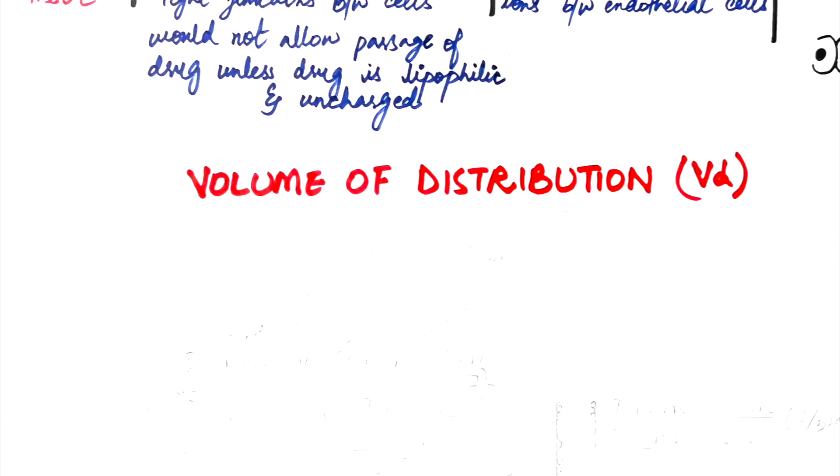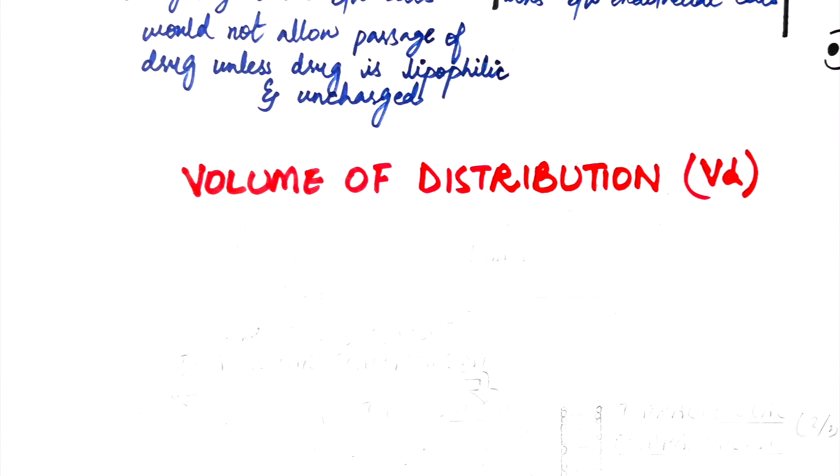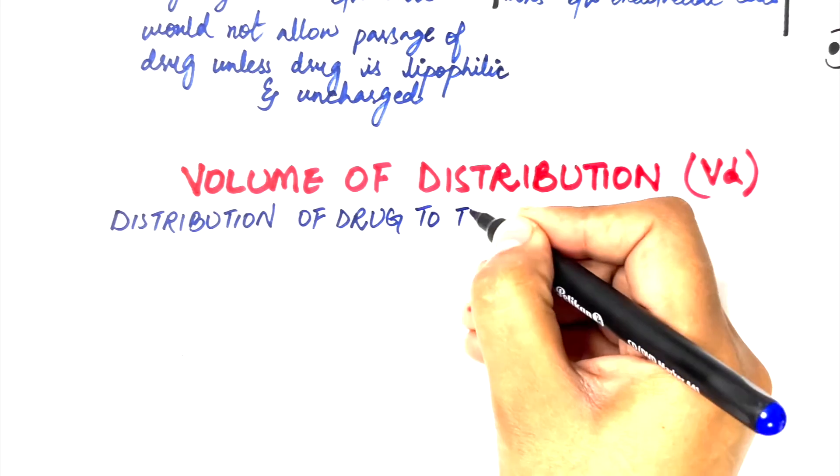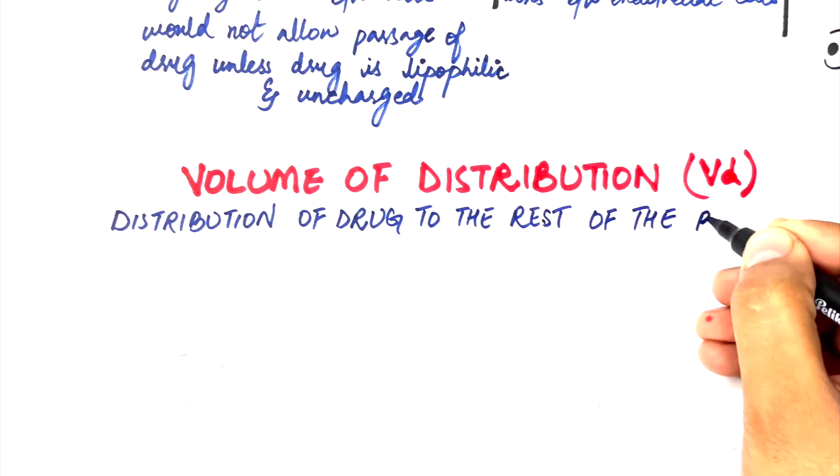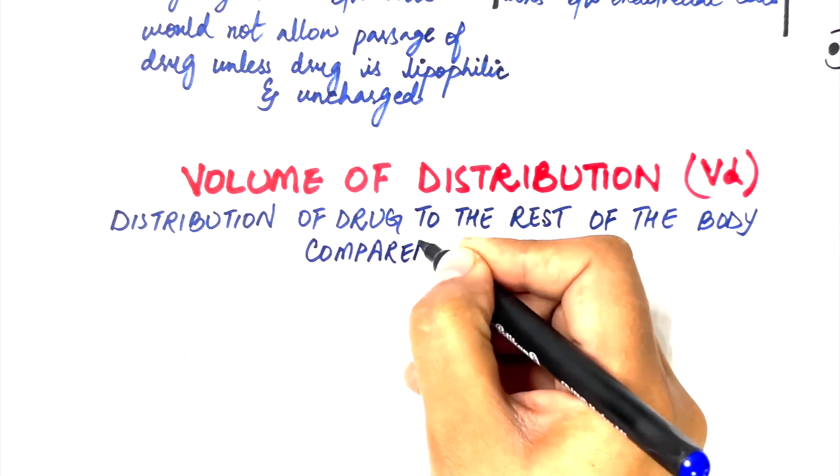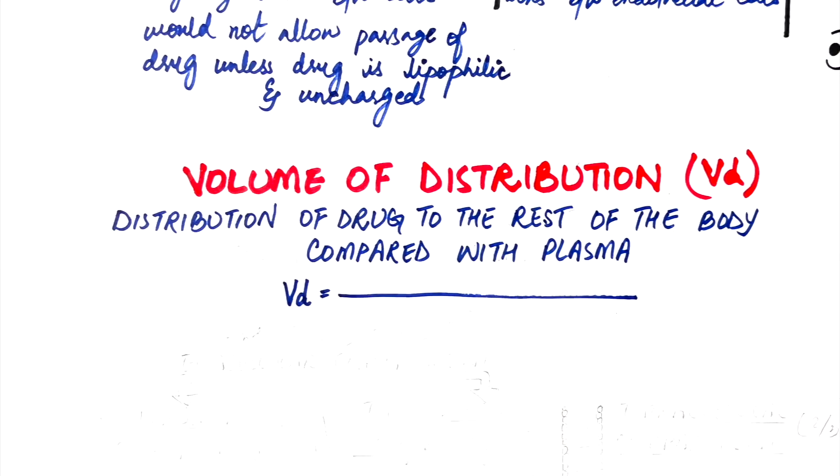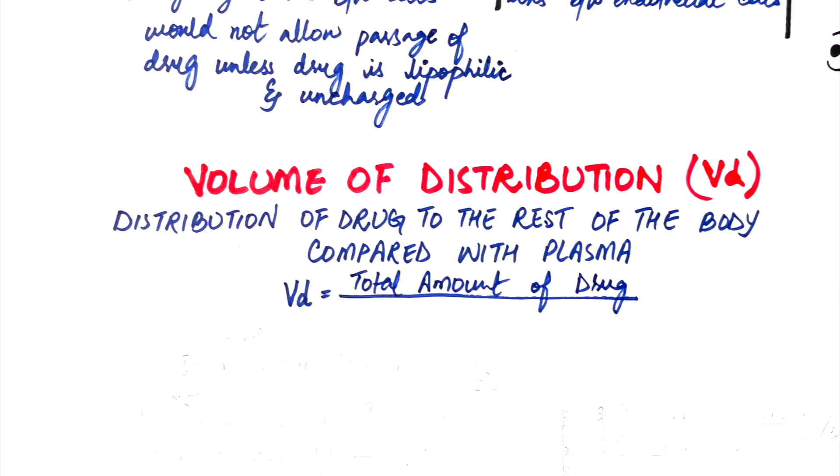The last and the most important factor of all is the volume of distribution of a drug, abbreviated as VD. Volume of drug distribution tells us how extensively the drug is distributed to the rest of the body compared with the plasma. It is calculated by dividing the amount of drug introduced into the body by the plasma concentration at zero time.